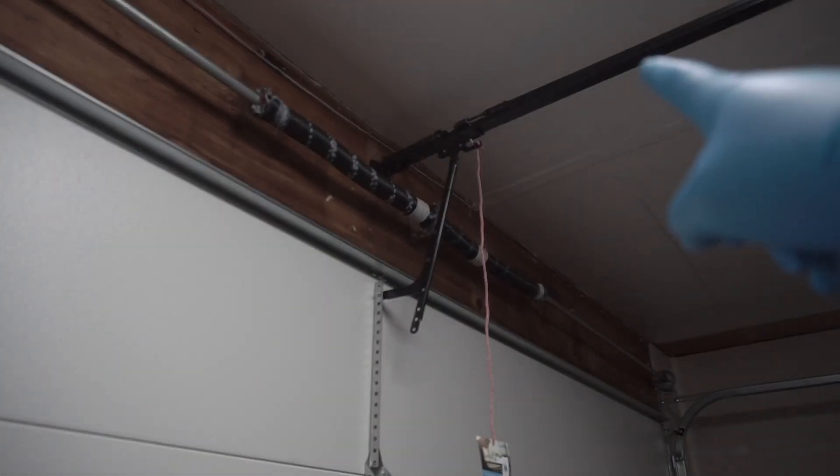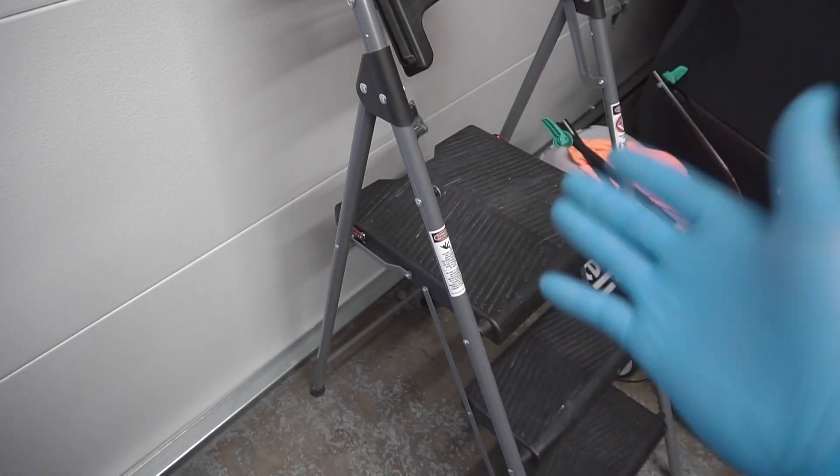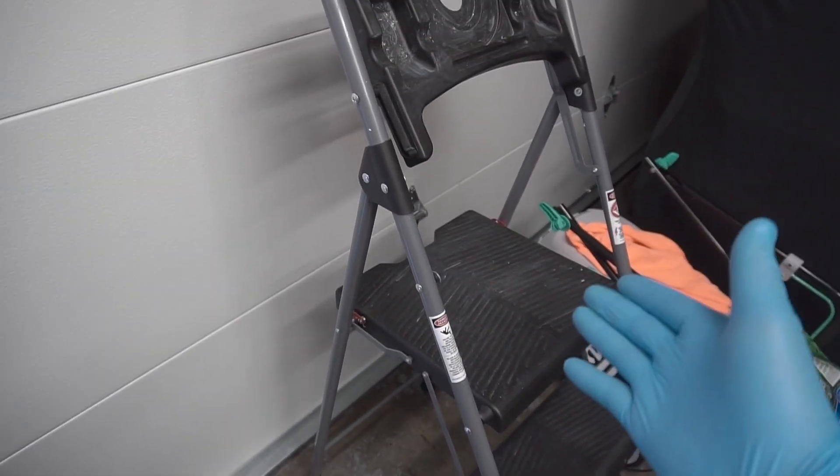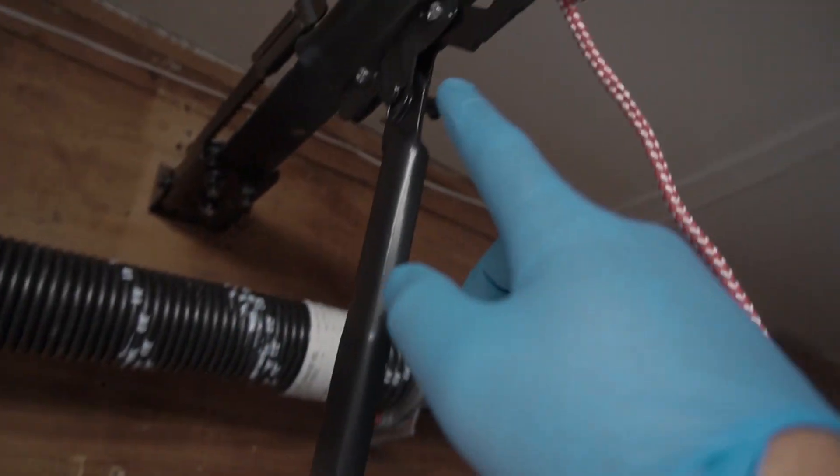The next area that we're going to be focusing on is this arm right here where it actually connects the garage door to the railing. Now to get to that part I am going to be using a step ladder, so if you have one or something you can step on safely please use that. Two parts on this arm that have movement are on this and also around here.